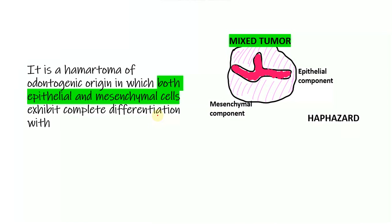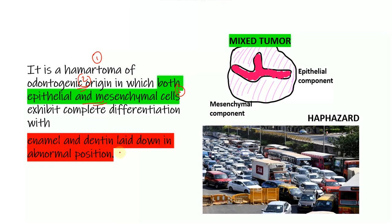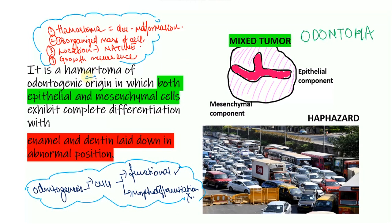Odontoma is essentially one of those tumors where I prefer to study the definition upfront. Let's go over the definition one by one because the rest of it is really easy. Starting with a brief overview: it is a hamartoma of odontogenic origin. It's not a neoplastic process — it is a hamartoma.